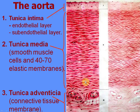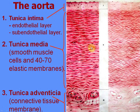The elastic fibers and membranes are not stained by hematoxylin-eosin and are visible as light wavy lines. Following specific staining with orcein, the elastic fibers and membranes become visible — specifically stained by orcein. The tunica adventitia consists of connective tissue and contains vasa vasorum — small blood vessels feeding the wall of the vessel — as well as adipose tissue.